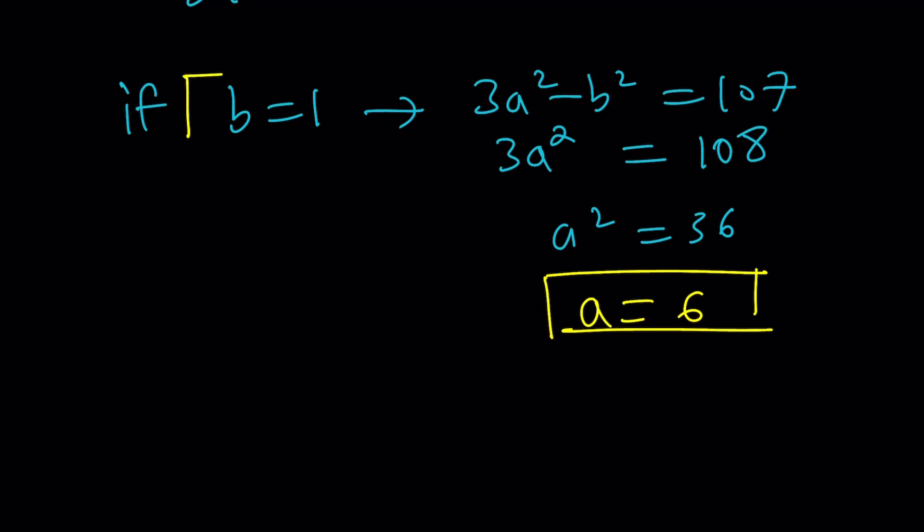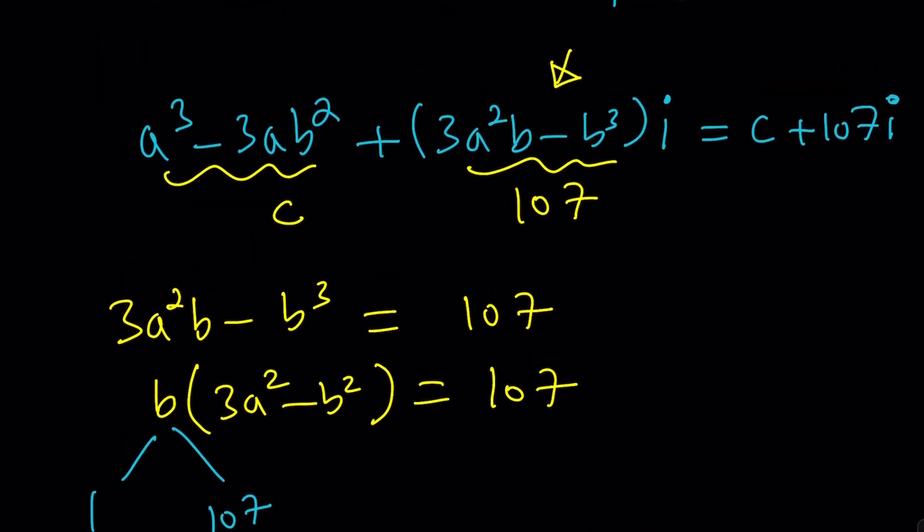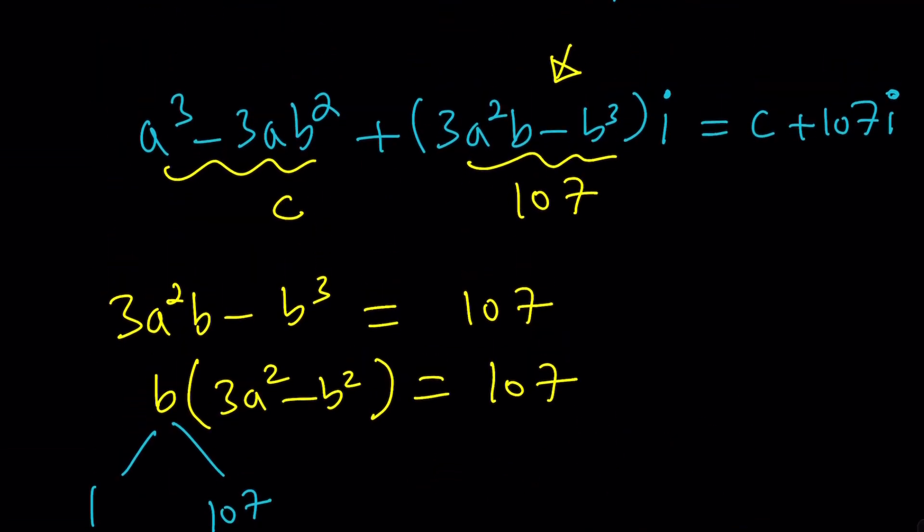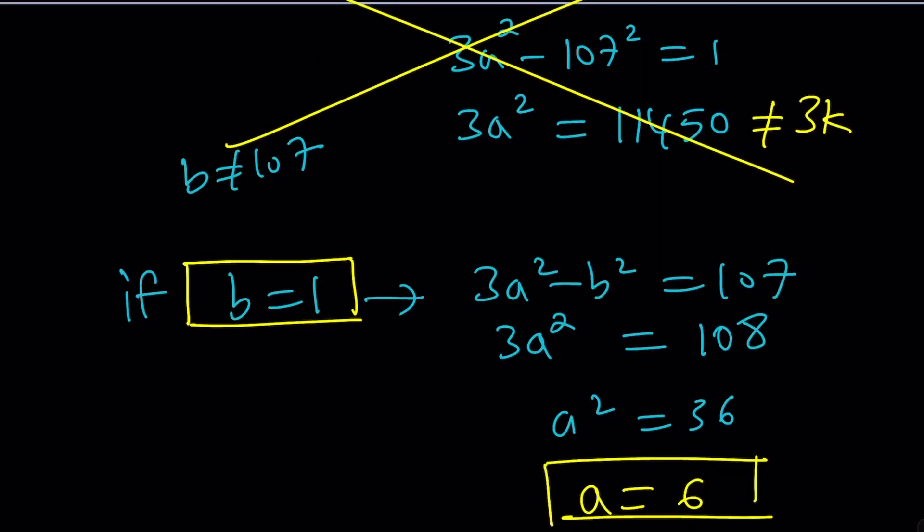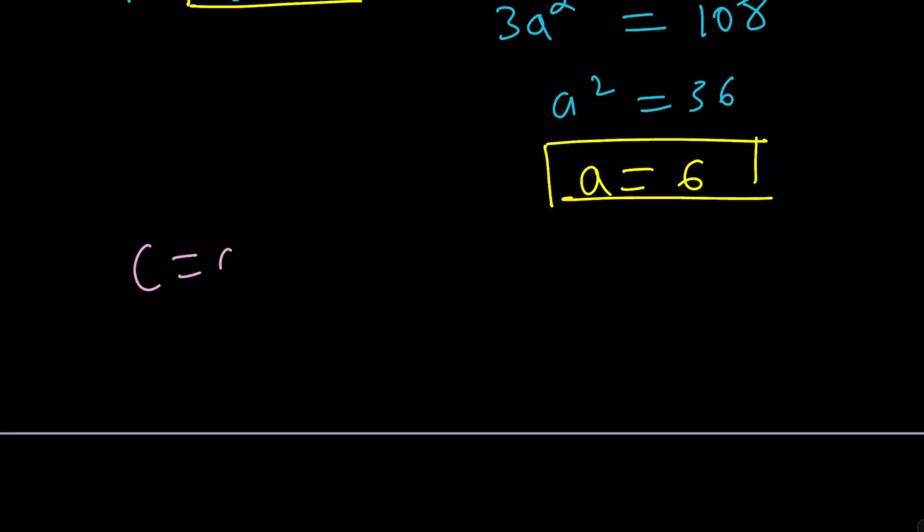And of course, B equals 1 is part of the solution. What about C? How do you find C? C is, let's go back and look at our equation again. Yes. This is what C is. A cubed minus 3AB squared. C is A cubed minus 3AB squared.